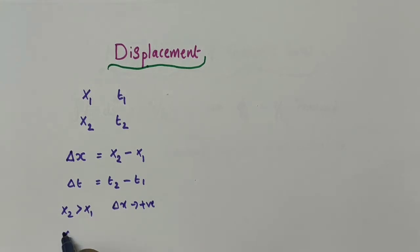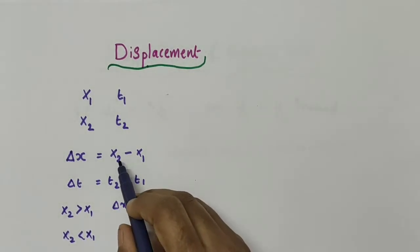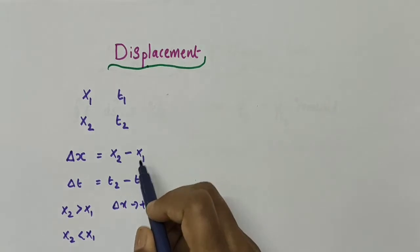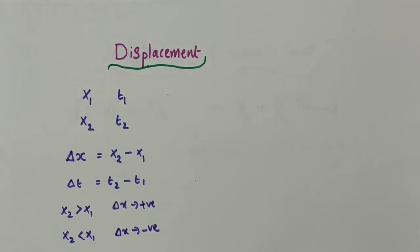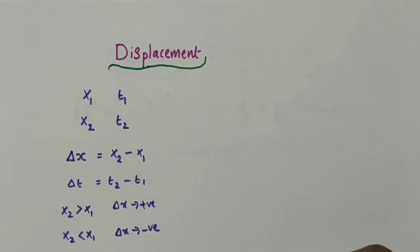If x2 is less than x1, then delta x will be negative. Here, we are dealing with motion of objects along a straight line — that is, we are dealing with rectilinear motion.